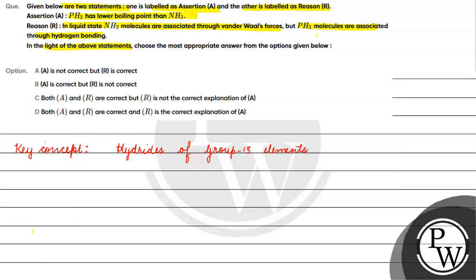And if this is NH3, what is in NH3? Present hydrogen bonding. What is in NH3? Hydrogen bonding present.